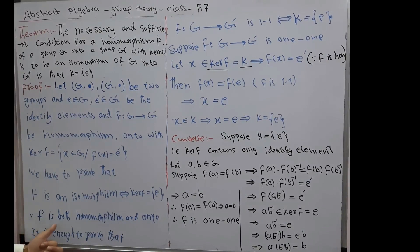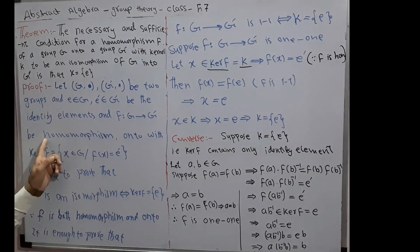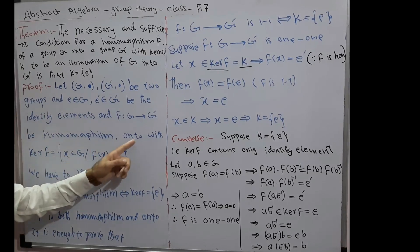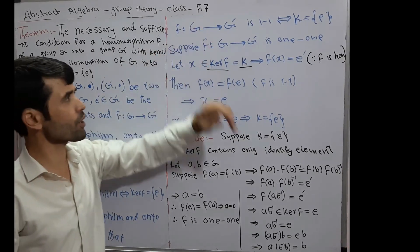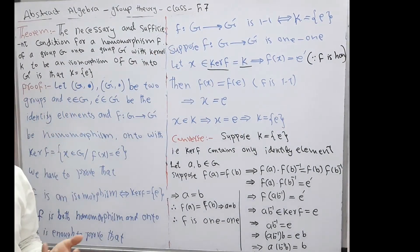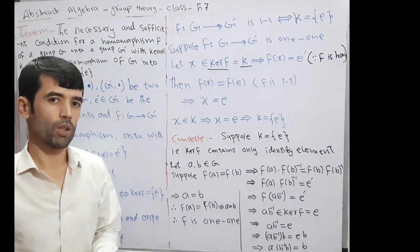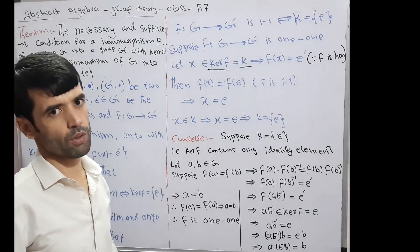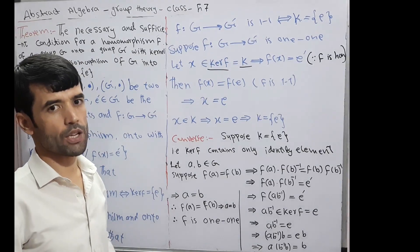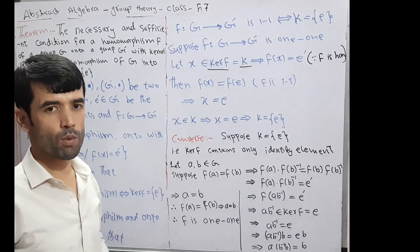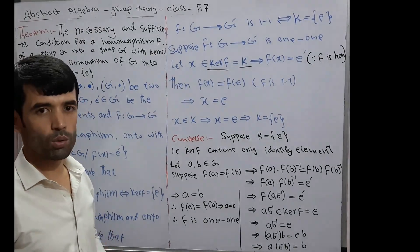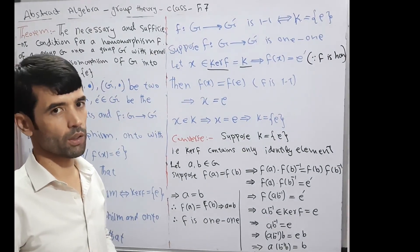Since F is both a homomorphism and onto, it is enough to prove that F: G → G' is one-one to establish isomorphism. We define isomorphism: a function F: G → G' is an isomorphism if F is a homomorphism, F is onto, and F is one-one.